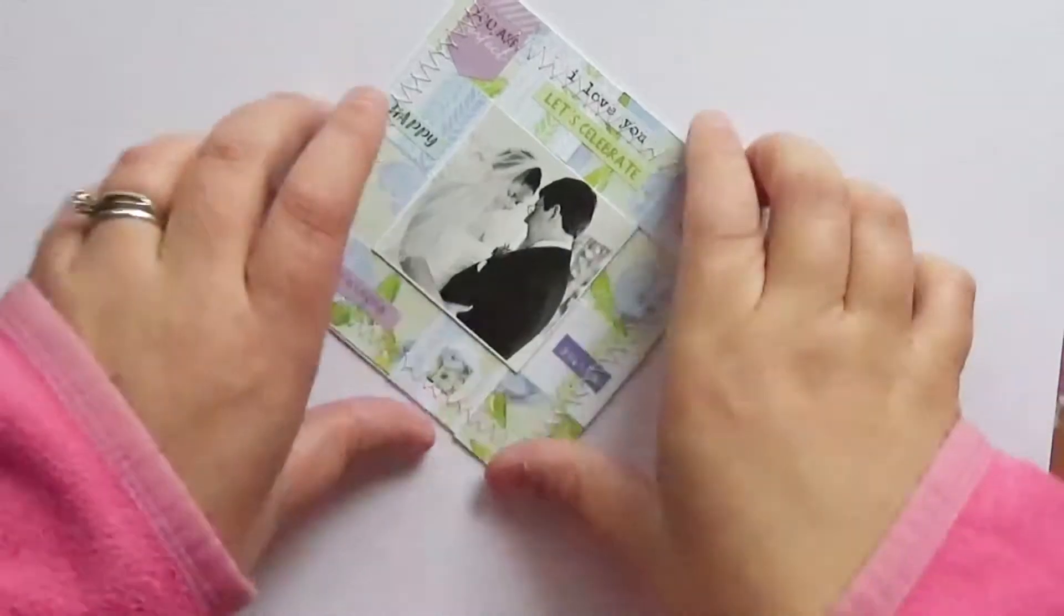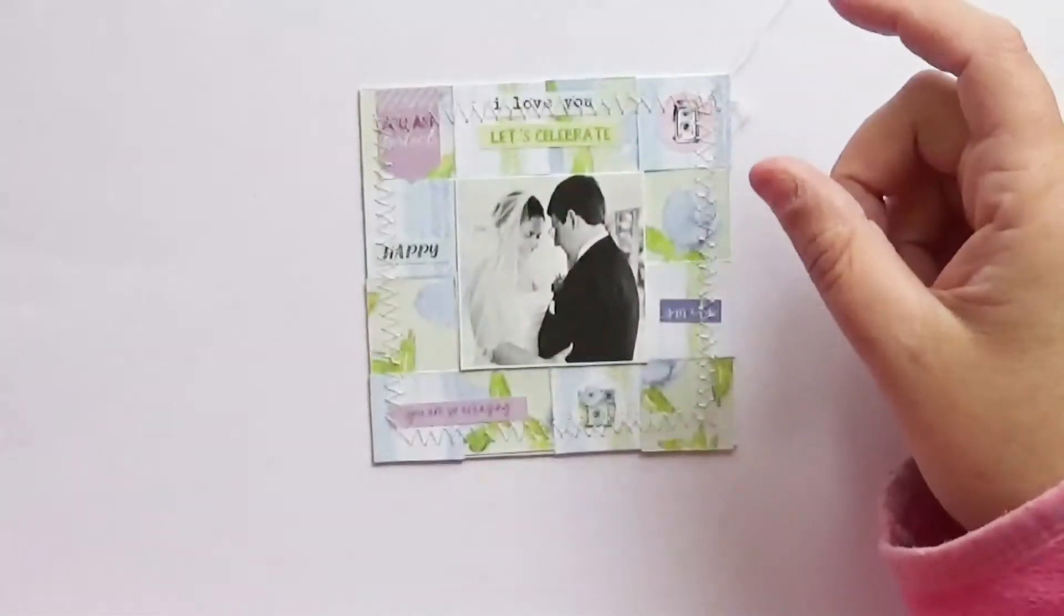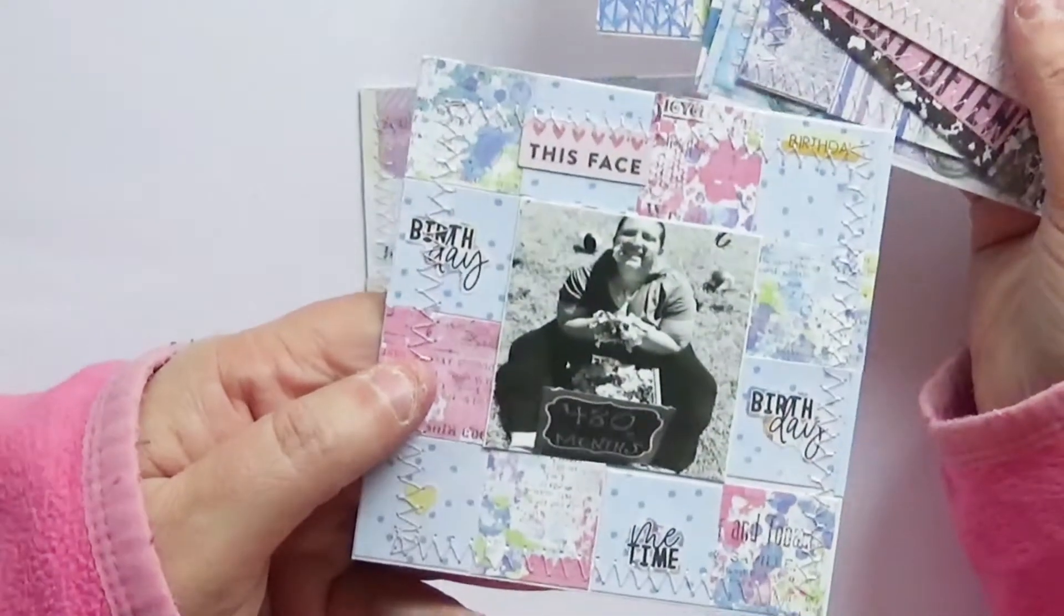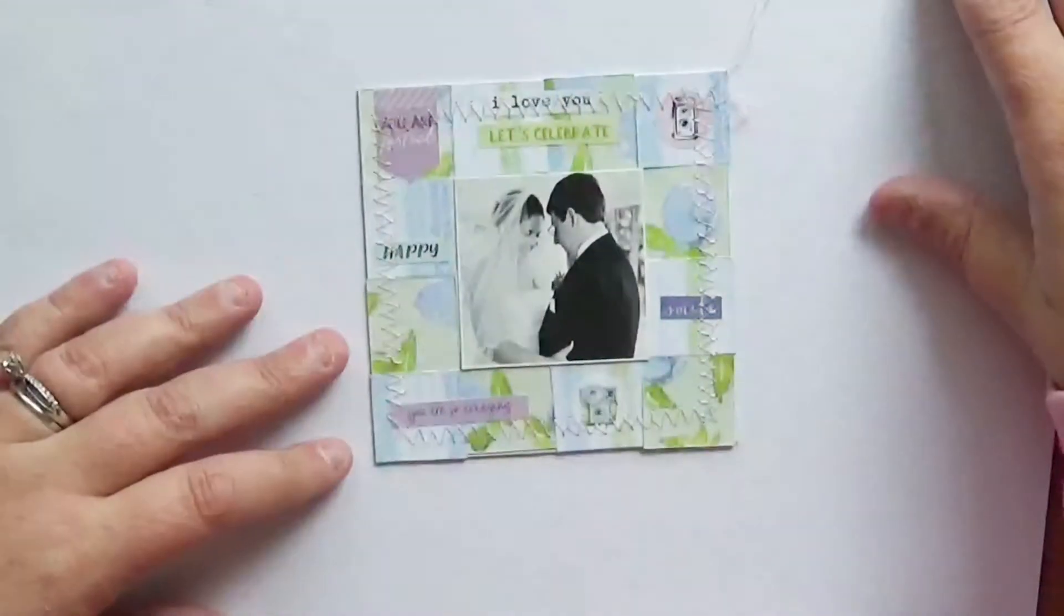All right, I'm back. This is the last part of this video. So what I did was I went ahead and for each of the squares I stitched around the edge for them, because remember this is a quilt. So I wanted to show you this here. This is my test piece.